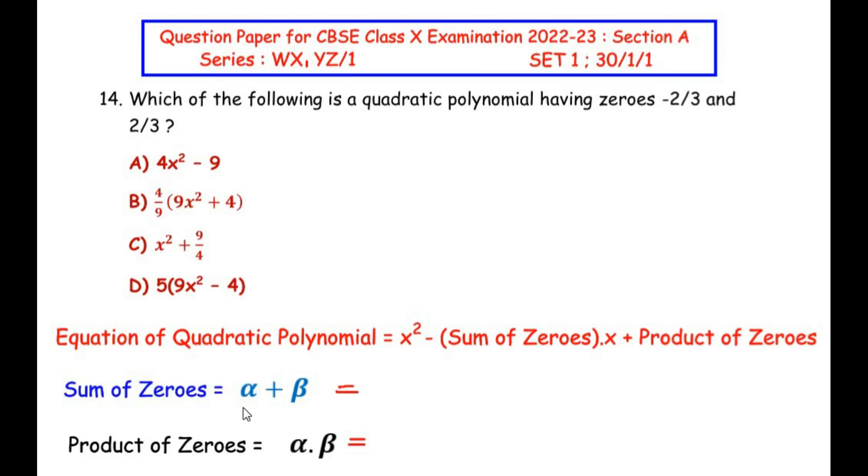So the sum of zeros is given by α + β. So let us consider that -2/3 is α and +2/3 is β. So adding these two: -2/3 + 2/3. So you can see these are two same numbers but with opposite signs. So they will add up to zero.